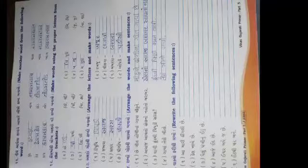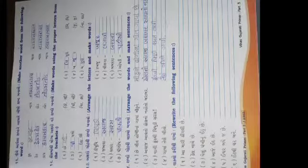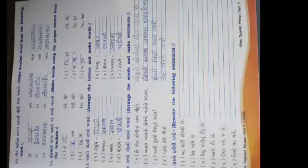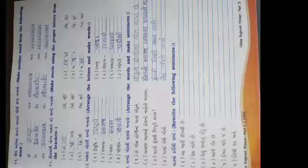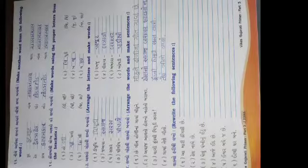પેજ નંબર ૮૧. ક્વેશ્ચન નંબર ૧૧ - નીચે આપેલા શબ્દ ને આધારે 'વિઝ' શબ્દ બનાઓ. કોદ - કૂદ-મ-કૂદ. નાચ - નાચ-મ-નાચ. ચાલ - ચાલ-મ-ચાલ. ઠેક - ઠેક-મ-ઠેક. દોડ - દોડ-મ-દોડ. નાસ - નાસ-મ-નાસ. કાપ - કાપ-મ-કાપ. તોડ - તોડ-મ-તોડ. ભાગ - ભાગ-મ-ભાગ.